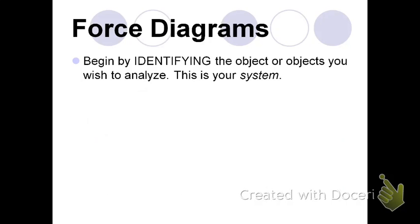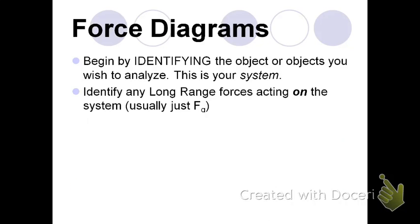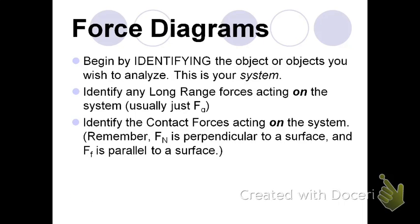Now let's review what we know about force diagrams. If we want to draw a force diagram, we begin by identifying the object or objects that we wish to analyze. This is our system. We draw a dot to represent our system. We identify any long-range forces acting on the system. That's going to be just gravity for the stuff that we're doing. Then we identify any contact forces acting on a system. So that depends on what's touching it. Remember, if it's touching a surface, a normal force would be perpendicular to the surface. And a friction force would be parallel to the surface.